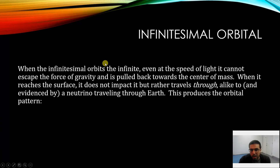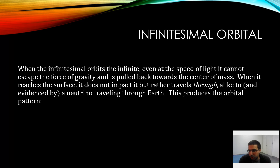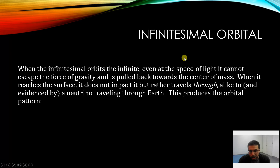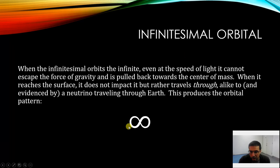When the infinitesimal orbits the "infinite," even at the speed of light it cannot escape the force of gravity and is pulled back towards the center of mass. And rather than crashing into the surface, it travels through the body, alike to a neutrino traveling through the earth when it reaches the surface. And so this produces the orbital pattern of a figure-eight flow pattern of the infinitesimal through the infinite.